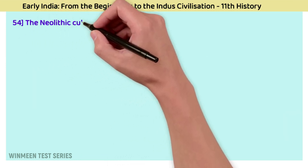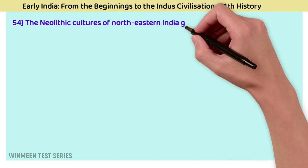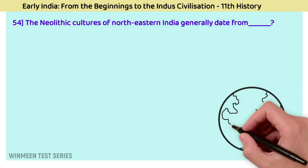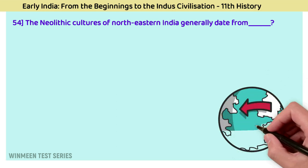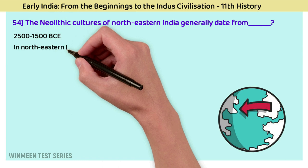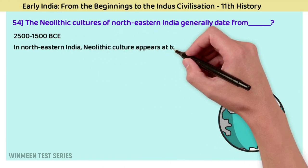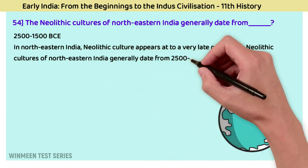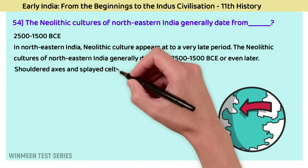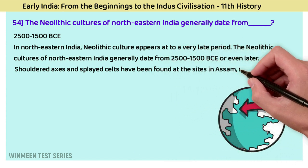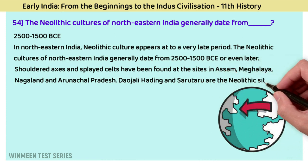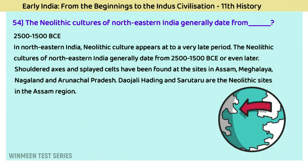Question 54: The Neolithic cultures of North-East India generally date from? The answer is 2500 to 1500 BCE. In North-Eastern India, the Neolithic culture appears at a very late period. This culture generally dates from 2500 to 1500 BCE or even later. Shouldered axes and splayed celts have been found in Assam, Meghalaya, Nagaland, and Arunachal Pradesh. Daojali Hading and Sarutaru are Neolithic sites in the Assam region.